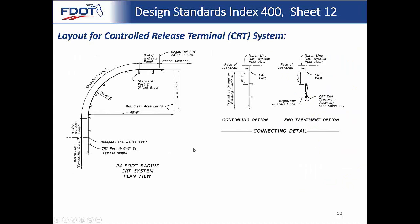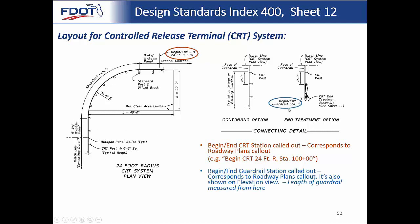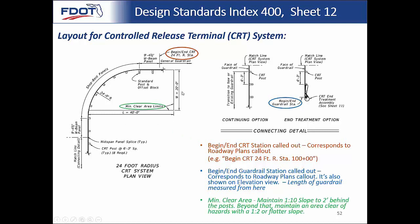Zooming in on the 24-foot radius system as an example, you can see the begin/end CRT station called out, similar to how it would appear in your plans. You call out begin or end depending on the direction of stationing, and call out the actual radius so the contractor knows which system they're building. You would draw this whole thing to scale. The begin/end guardrail station is at post one, shown in the elevation view on Sheet 11. Minimum clear area limits are clearly detailed here.